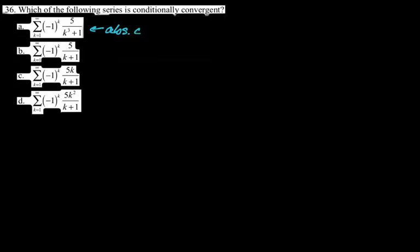Final question: which of the following series is conditionally convergent? Conditionally convergent means: taking the absolute value of the Nth term gives a divergent series, but with the alternating sign it converges. For choice A, the absolute value gives 5 over k³ — a convergent P-series, so it converges absolutely and is not the answer. For choice B, the absolute value gives 5/k — harmonic, which diverges. But with the (−1)^k it alternates, terms decrease, limit is 0, so it converges by the alternating series test. It is conditionally convergent — that's our answer.